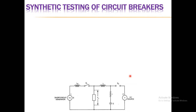As shown in the circuit diagram, there is a short circuit generator intended to produce the short circuit current, and one high voltage source used to produce the higher voltage stress across the circuit breaker when the short circuit current is interrupted by the circuit breaker.